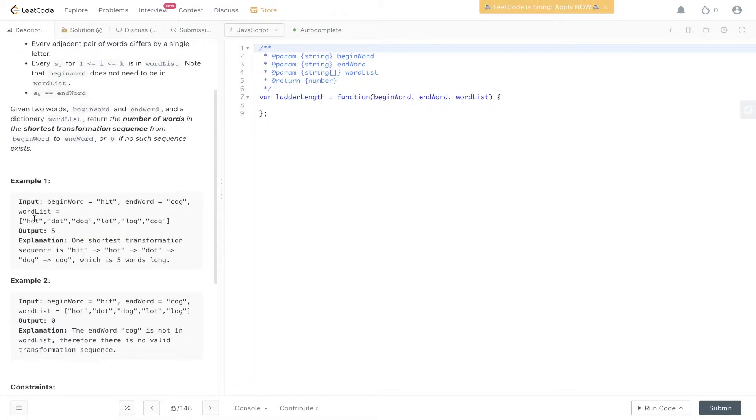Hit moves to hot so we change the i to the o. Hot moves to dot so we change the h to the d. Dot moves to dog so we change the t to the g and finally dog moves to cog. Overall that is five as the output.